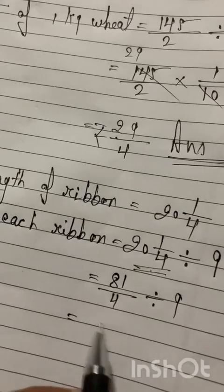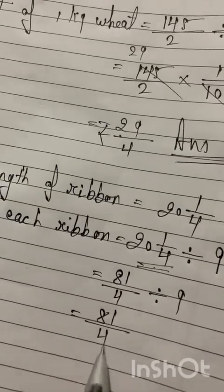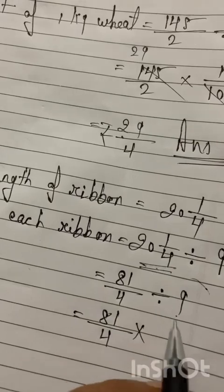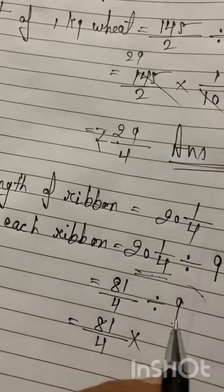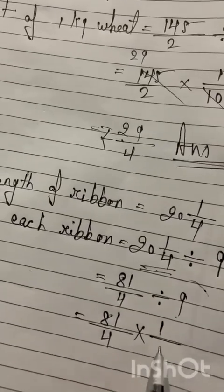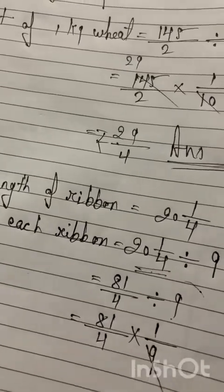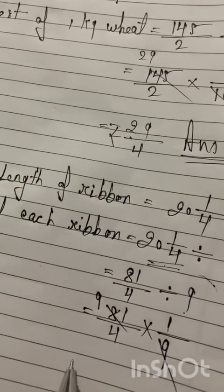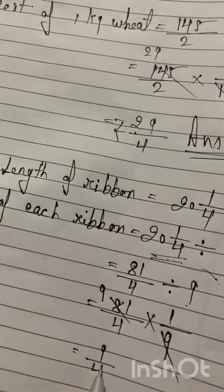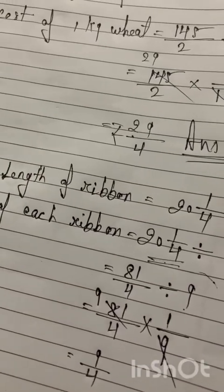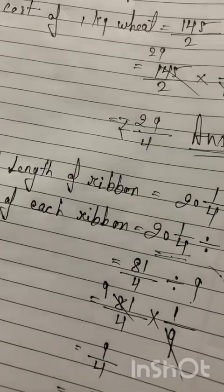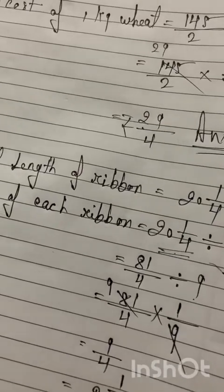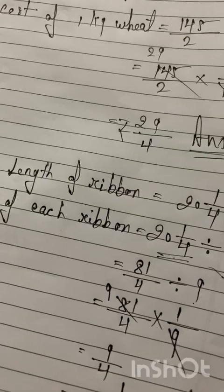We convert this division to multiplication and reciprocate 9 to get 1/9. 9 goes into 81 nine times, leaving 9/4. Simplifying, 4 goes into 8 twice. So 2 whole 1/4 meters is our answer.